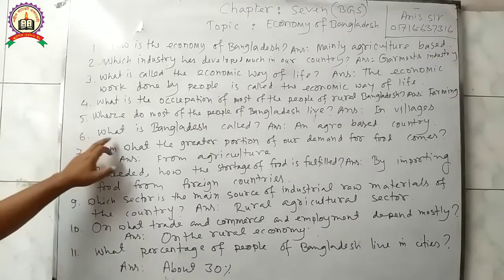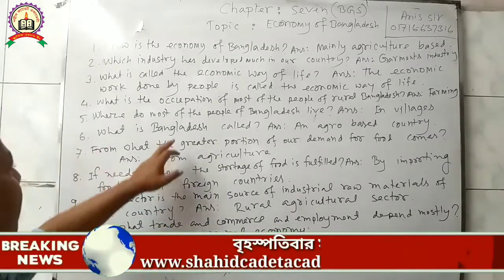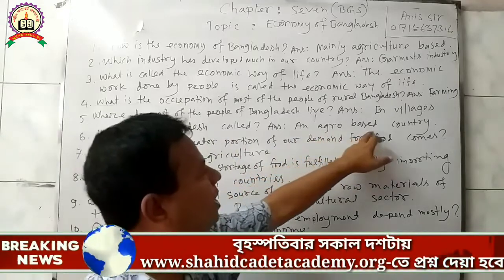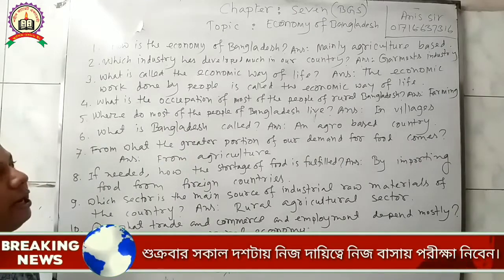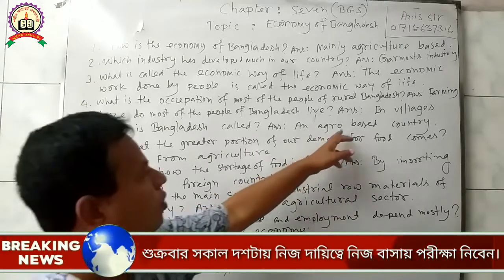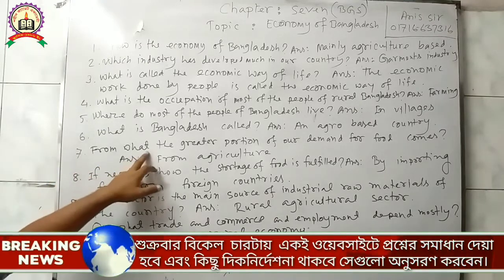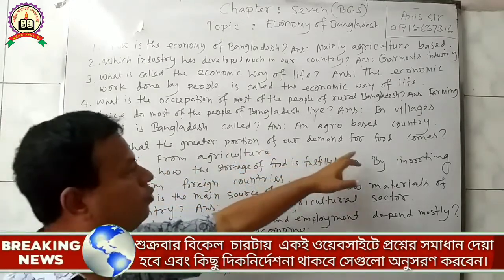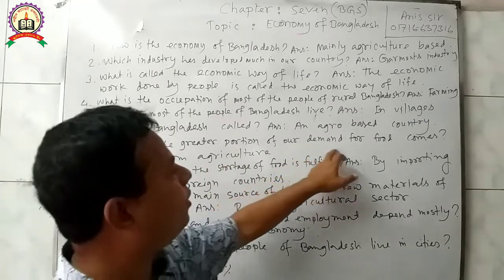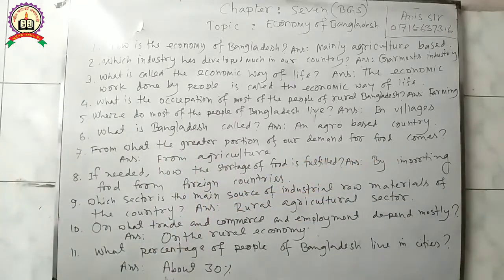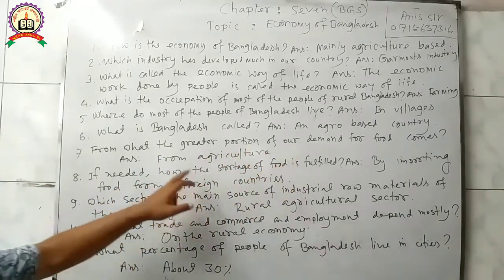Question 6: What is Bangladesh called? Answer: Bangladesh is called an agro-based country — that means agriculture-based country. Question 7: From what does the greater portion of our demand for food come? Answer: The greater portion of our demand for food comes from agriculture.